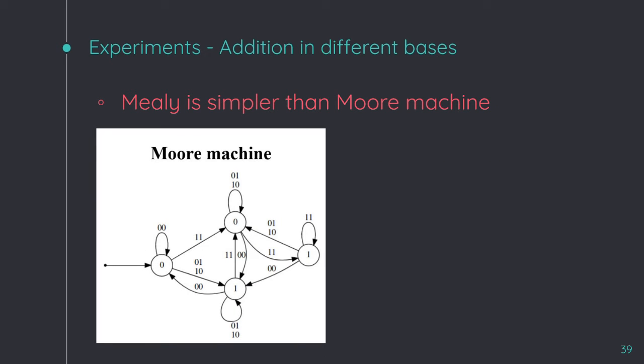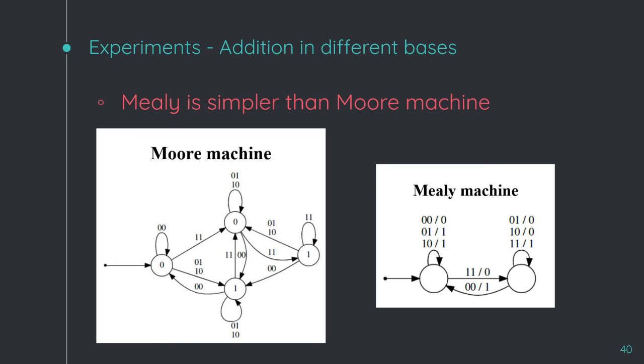The problem of the addition of two numbers on different bases is a different story. Here, the Moore machine needs more and more states when we increase the base. Why is that? Because we need two states per digit in the base. For example, this automaton with base 2 needs four different states. However, this time, the Mealy machine doesn't need it. Whatever the base, the Mealy machine will always have two states. Why is that?